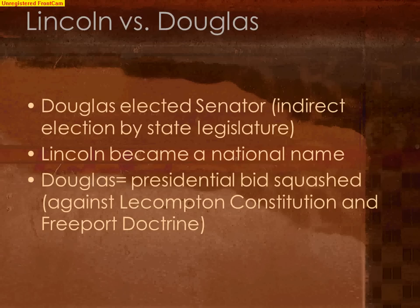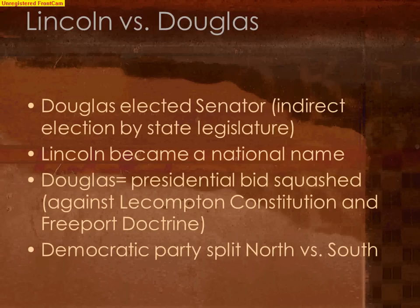Southerners were not going to vote for Stephen Douglas because he had openly come out against the Lecompton Constitution and given the Freeport Doctrine, not unequivocally siding with slavery. So even though Douglas won in 1858, this is part of why he did not win the presidential election in 1860. From here on out, the Democratic Party would be split between the North and the South — the only way Democrats could win in 1860 was to be truly a national party, but we'll talk about that in a minute. Here is Lincoln and Douglas during their debates in 1858.